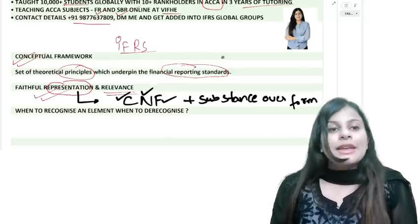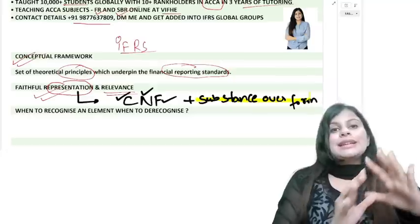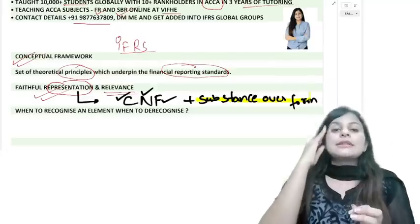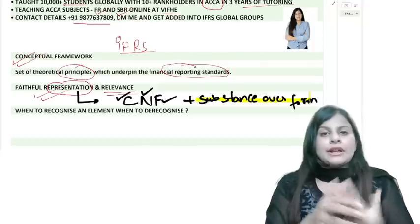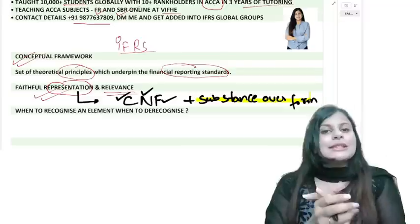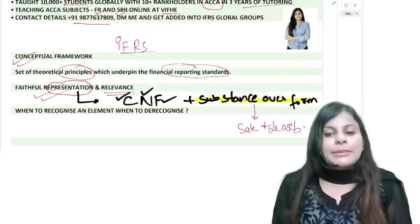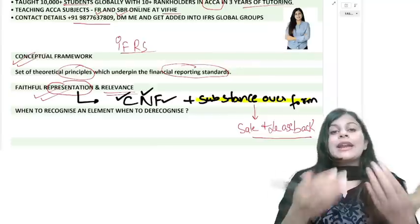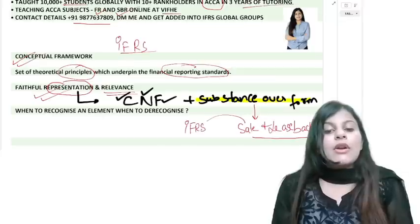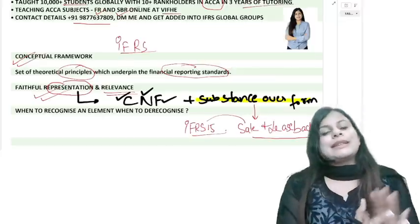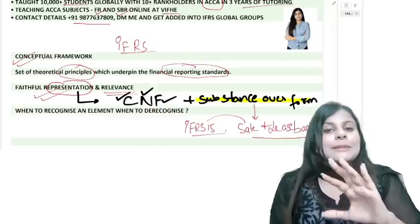Substance over form means every transaction has a legal aspect and an economic substance, and we consider economic substance over the legal form. For example, in sale and leaseback under IFRS 16, you legally made a sale, but you still refer to IFRS 15 to assess whether control has passed — because the economic substance matters. Group accounts consolidation also exists because of substance over form.